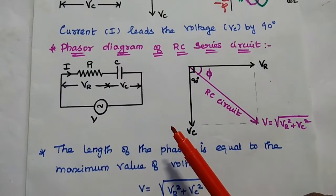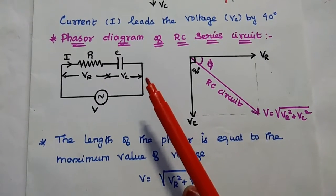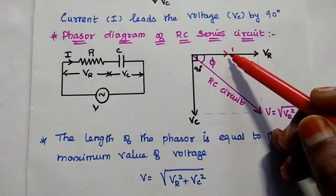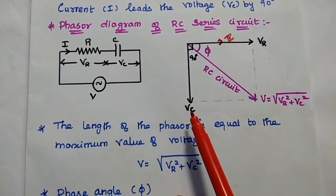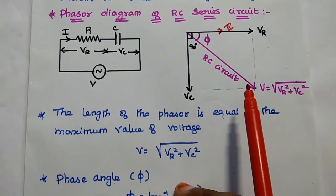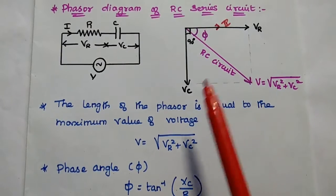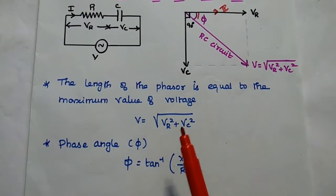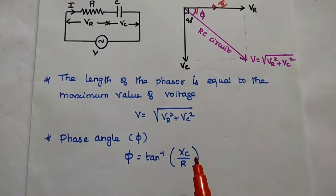Next, we combine the two phasor diagrams to get the phasor diagram of the RC series circuit. We connect the resistor in series with the capacitor. The voltage across the resistor Vr is in phase with current I, but in the case of the capacitor, current leads by 90 degrees. The resultant RC circuit phasor diagram gives magnitude V = √(Vr² + Vc²). The phase angle can be obtained using the formula: tan⁻¹ of the imaginary part of impedance to the real part, that is Xc/R.